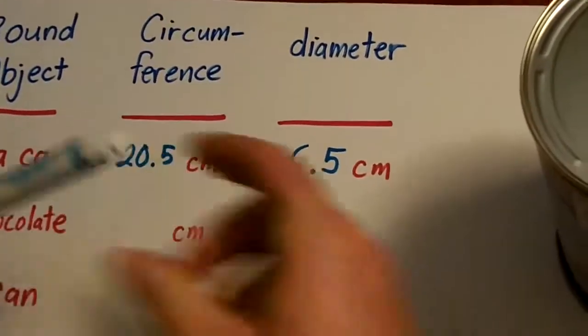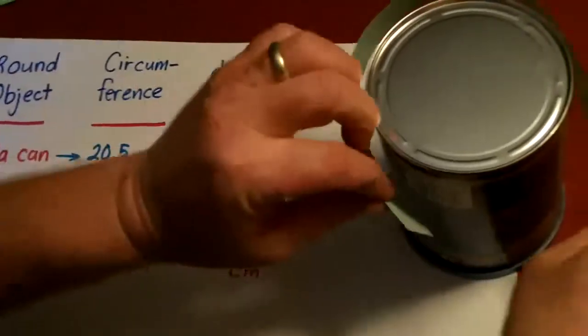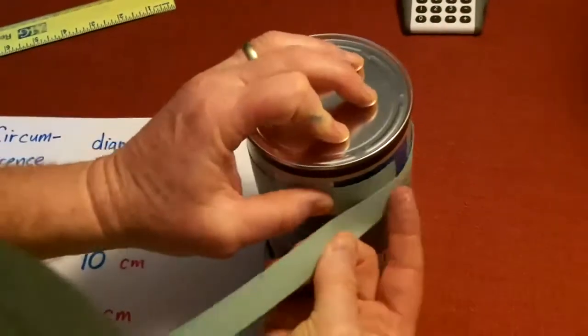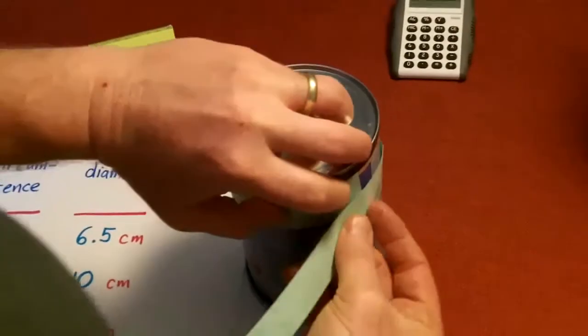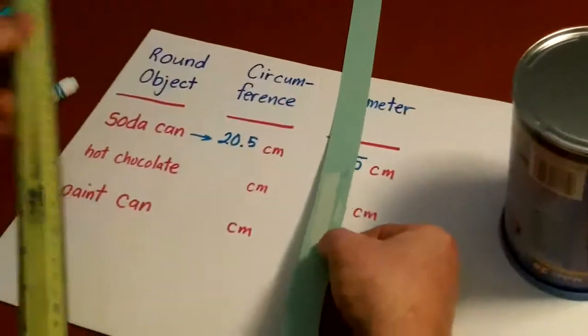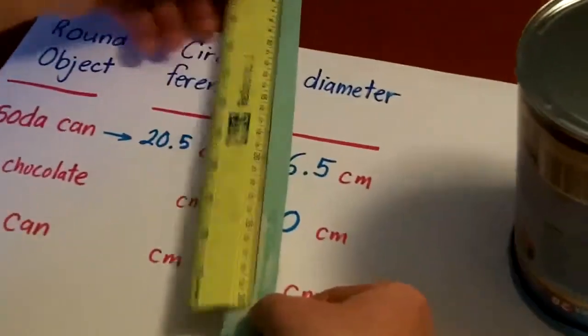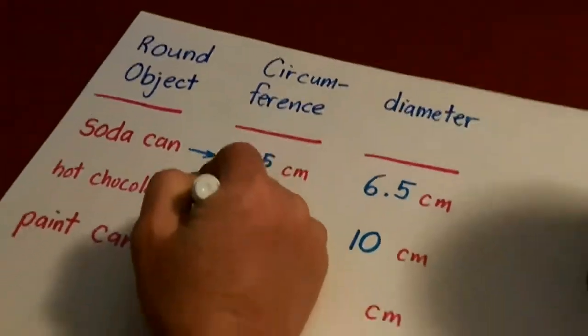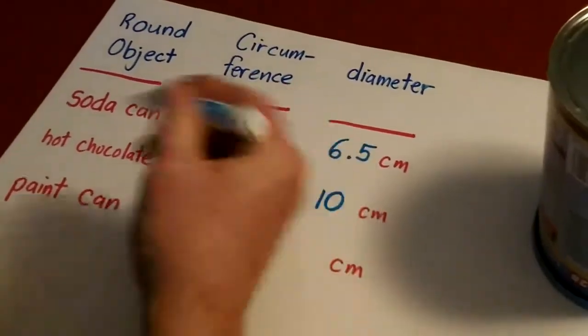And then if we measure around, go right about there. And then this is going to measure out to, that's over 30, it's going to be 31 1⁄2, 31 1⁄2 centimeters around.